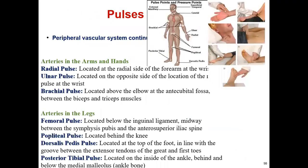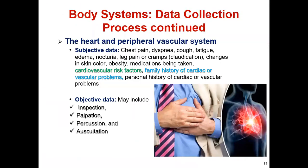When a patient complains like this, we call this subjective data. When the patient complains according to their own language, we call it subjective data. Commonly: chest pain, shortness of breath or dyspnea, cough (productive or dry), fatigue, edema, nocturia, leg pain or cramping, and claudication.